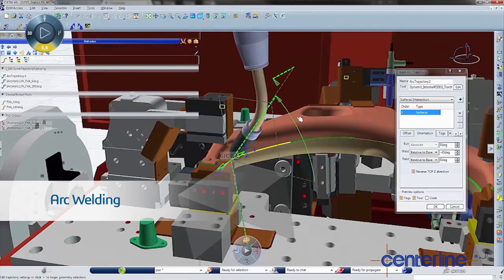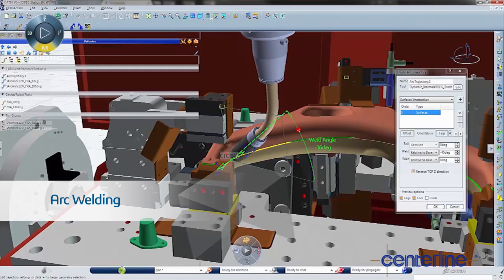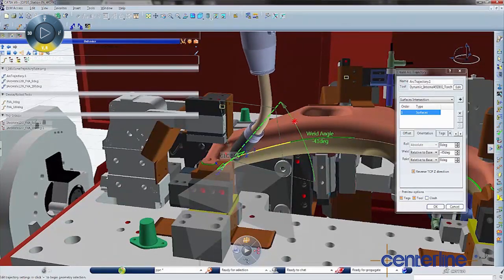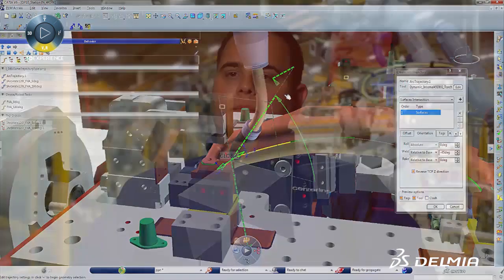One of my favorite features of Delmia V6 would have to be the arc welding package. In my eight years experience doing simulations, it's really a cut above the rest. The feedback, the graphical interface, very unique solution.